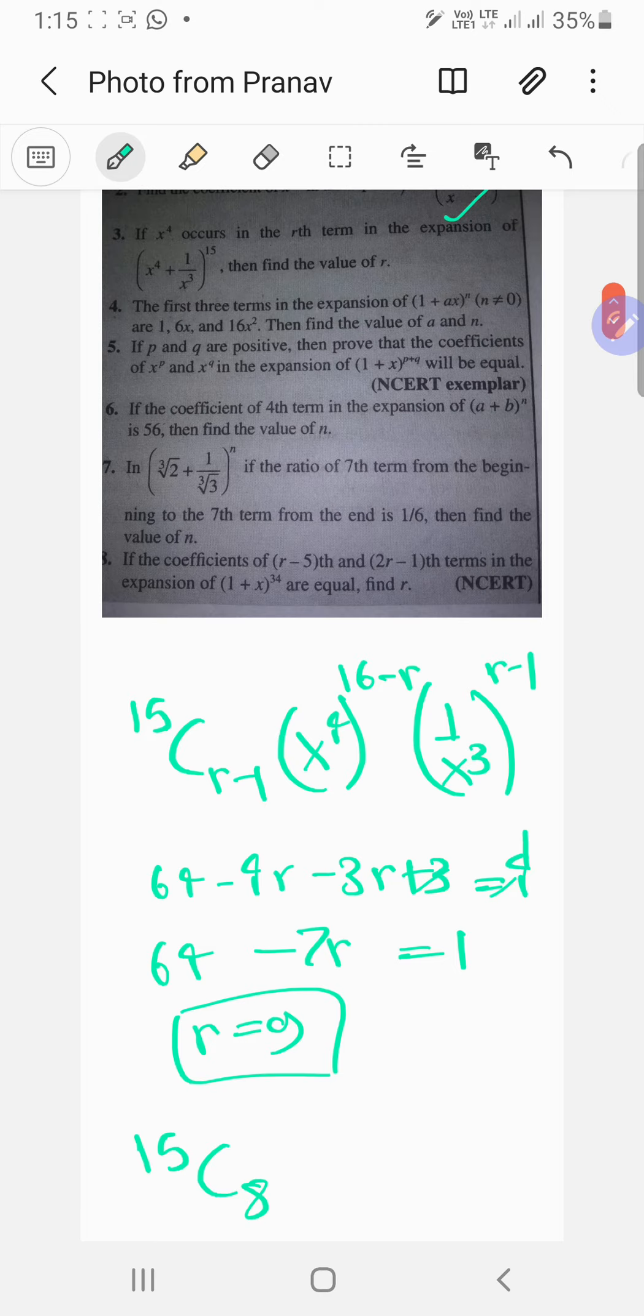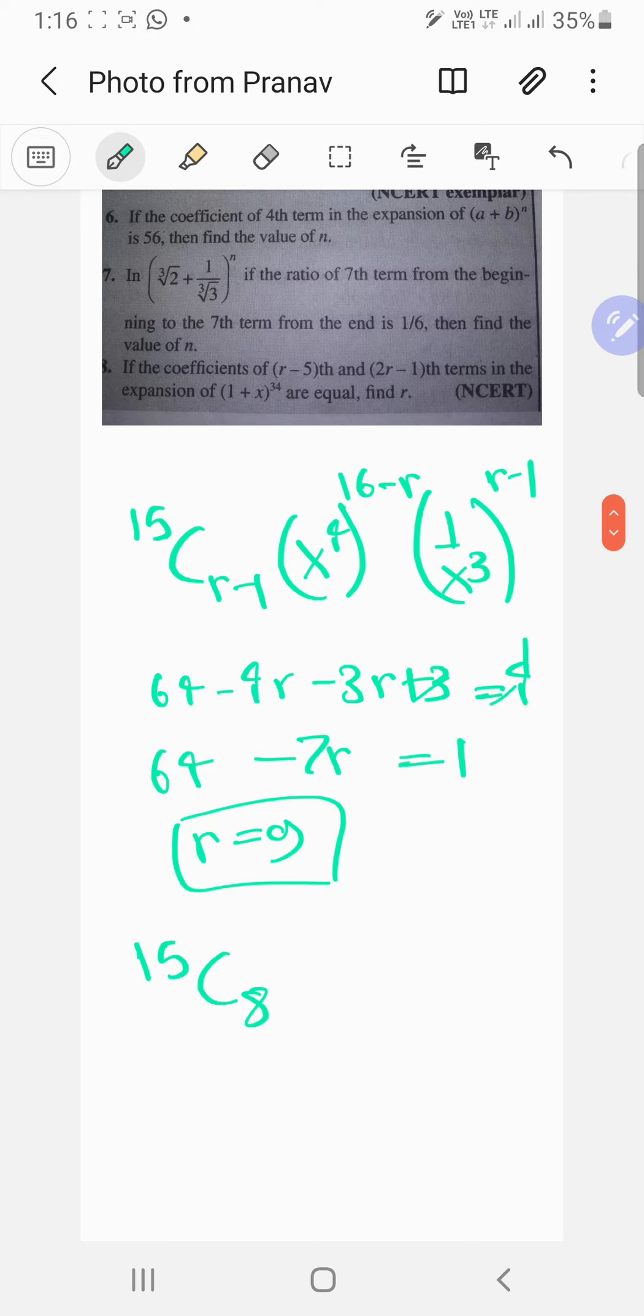Right, we want x power 4. So it's gonna be (x^4) raised to the... when you put r equals 9 over there, you just get 5th power. Wait, am I doing this correct? No, you get the 7th power, obviously.